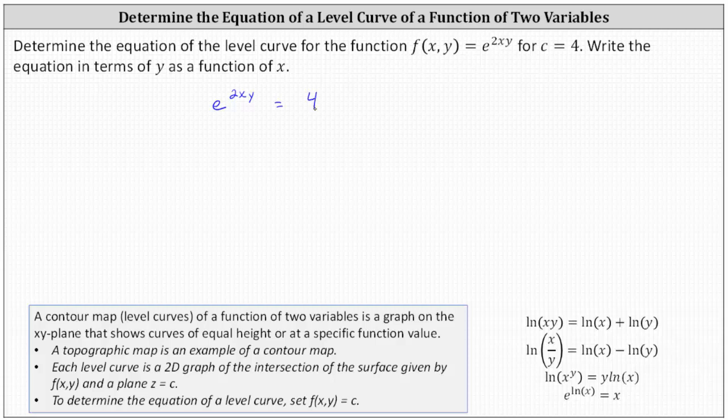To do this, we'll use the log property: natural log of x^y equals y times natural log x. To use this property, we will now take the natural log of both sides of the equation. ln(e^(2xy)) = ln(4).